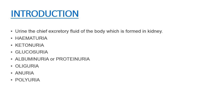In urine, normally abnormal constituents are not present. If present, then it indicates certain diseases. If any of the abnormal constituents are present in the urine, then there are chances of some disease condition.